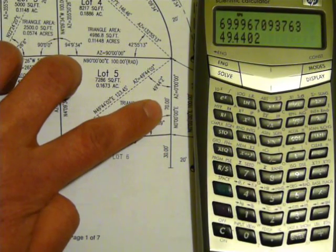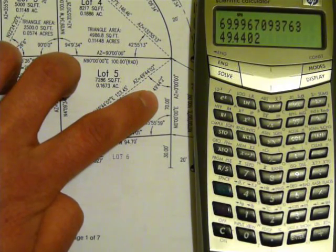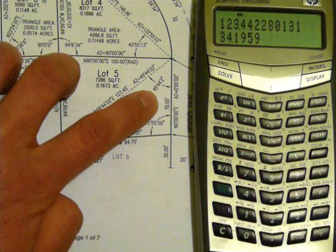Next adjacent side and angle: 70 rounded, and then the angle 49, 44, 02. Press RS.